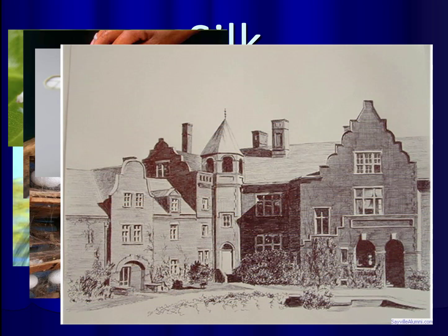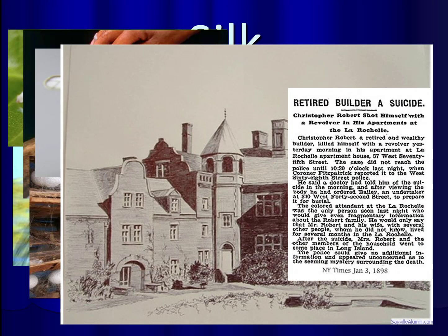Believe it or not, about a hundred years ago on Long Island there was a very fancy estate called Pepperidge in Oakdale. The builder constructed it for his bride, but when she left him for a younger man, he committed suicide and no one ever actually lived in the chateau. About 50 years later, a young man thought he was going to start farming silk on Long Island, filled the building with mulberry trees, and tried to grow silkworms there — but it absolutely didn't work.